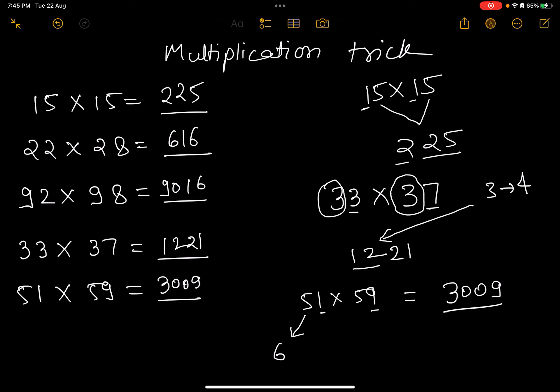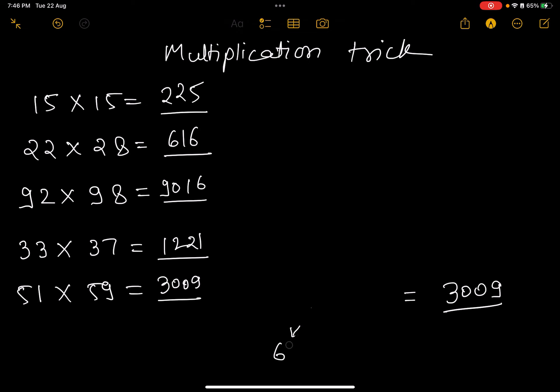Using this trick, we can multiply two-digit numbers very quickly. The only requirement for this multiplication trick is that the sum of the last digits should be 10, which is true in all these cases, and the digits at the tens place should be the same.